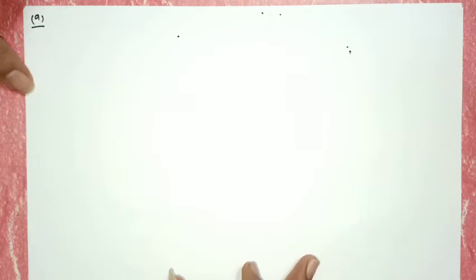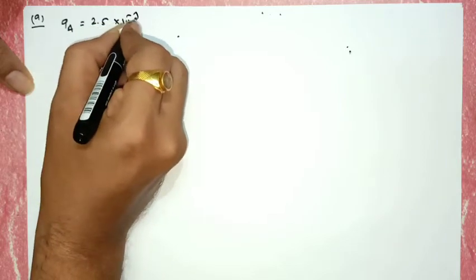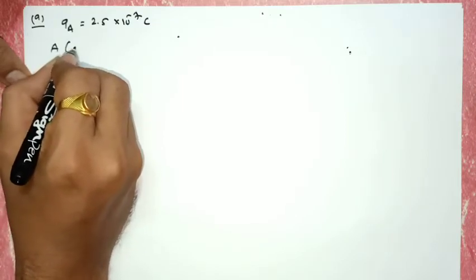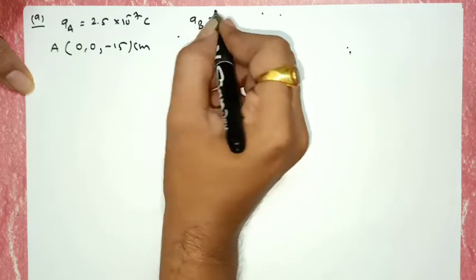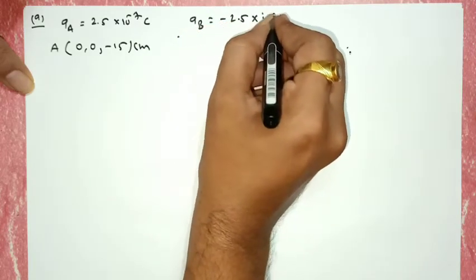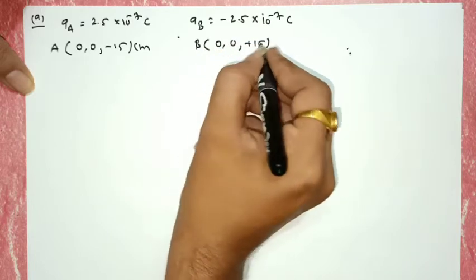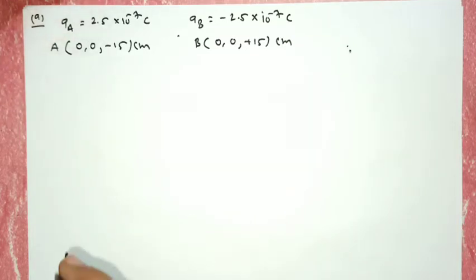Numerical 9: A system has two charges. QA = 2.5 × 10⁻⁷ coulomb located at point A with coordinates (0, 0, -15) cm. Another charge QB = -2.5 × 10⁻⁷ coulomb is at point B with coordinates (0, 0, +15) cm. Find the total charge and the electric dipole moment.